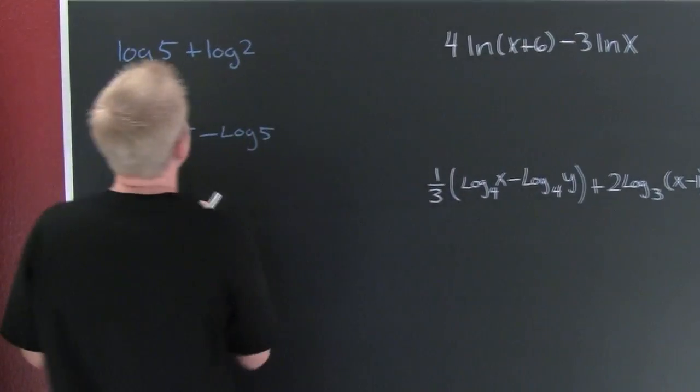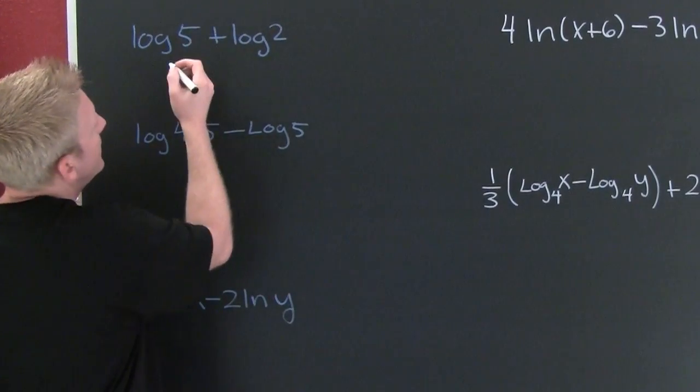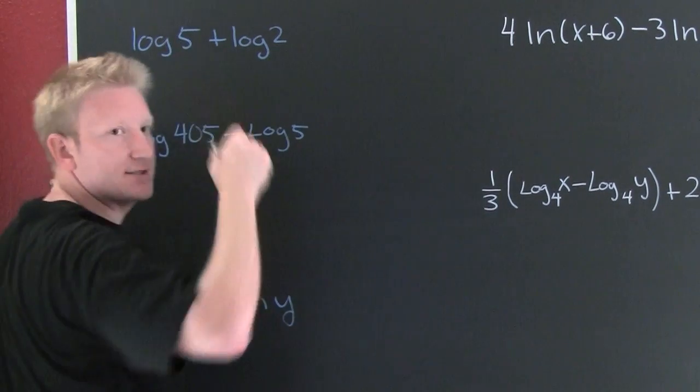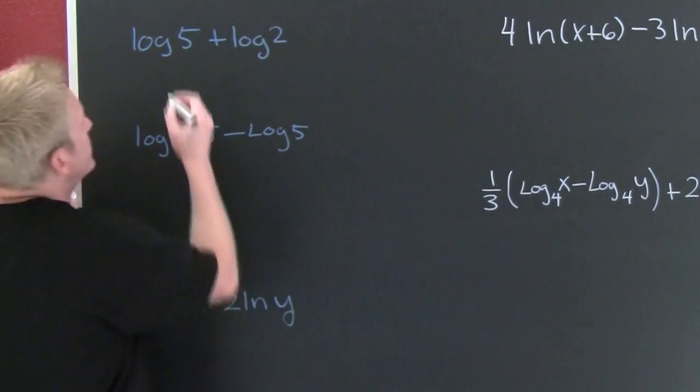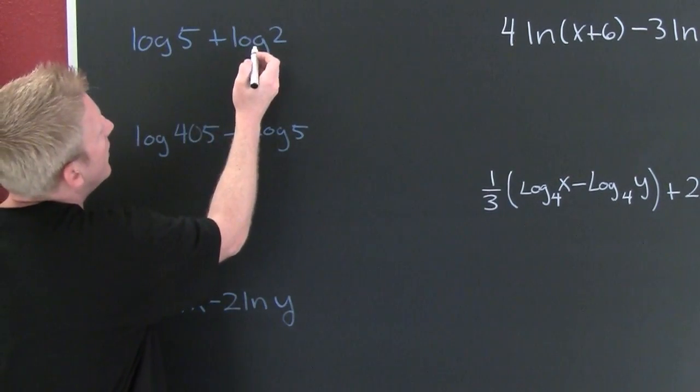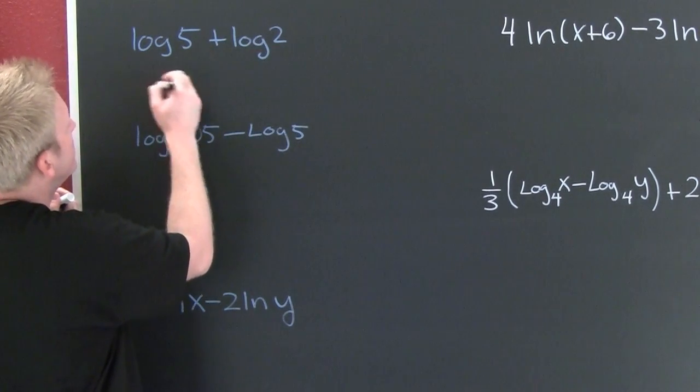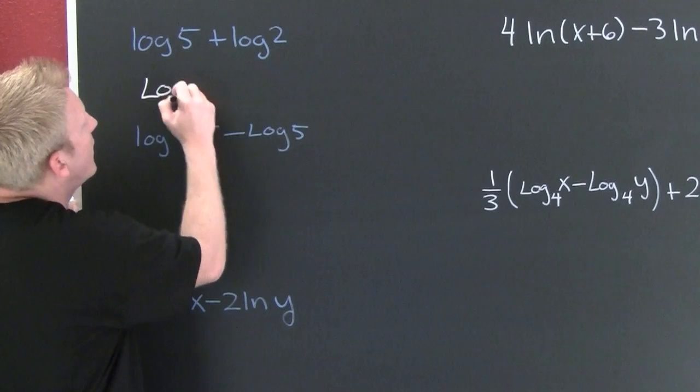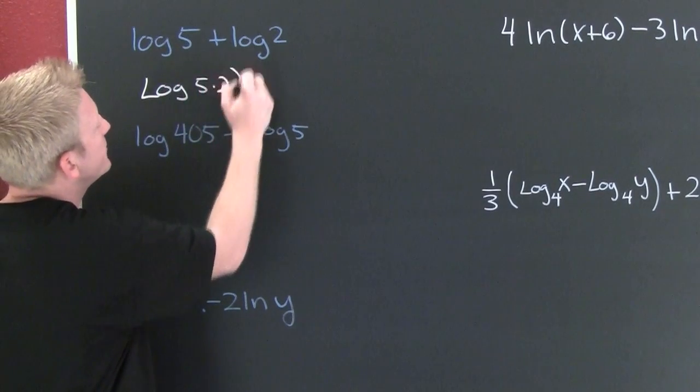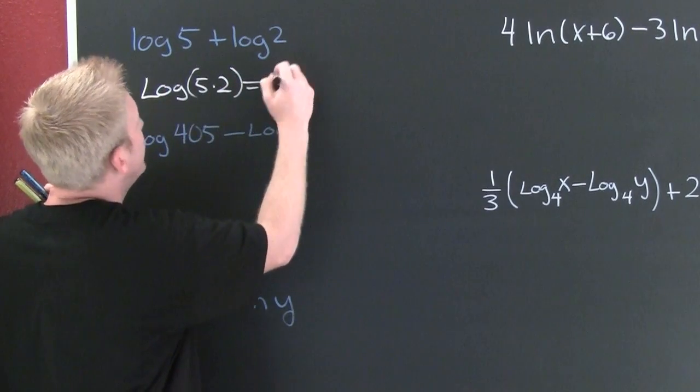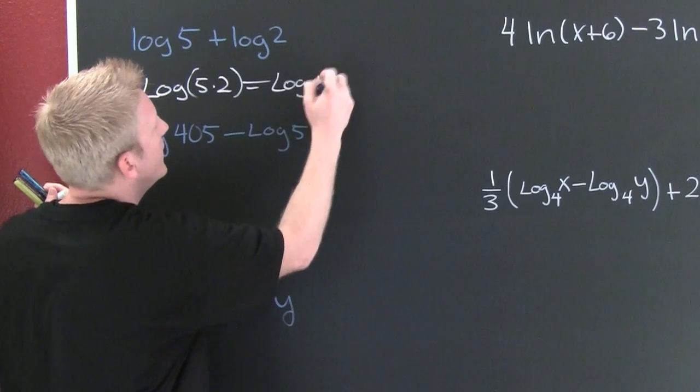Hit this example. I'm looking at this, man. Here I have the log. The sum of logs is the log of the product. So this is the log of five times two. And I multiply that, and that's the log of ten.